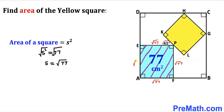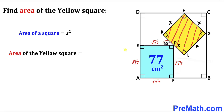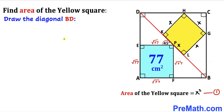Now let's focus on this yellow square. Let's assume this side length is x centimeters, so all four sides are x centimeters. The area of this yellow square is going to be x times x, which is x². We are using the area formula for a square. Let's call this equation number one. Our task is to find the value of x.